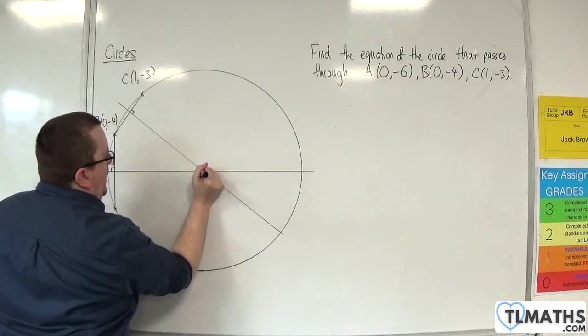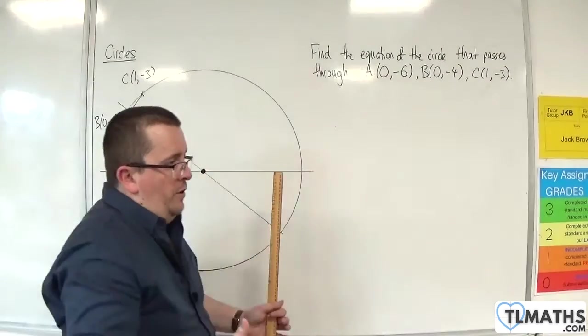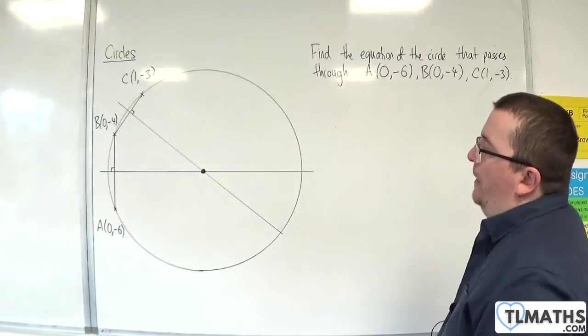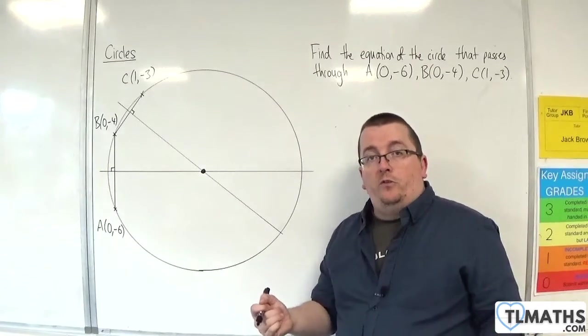And you'll notice that both of those lines go through the origin, not the origin, sorry, the centre of the circle. So this will happen regardless of what circle you're dealing with.